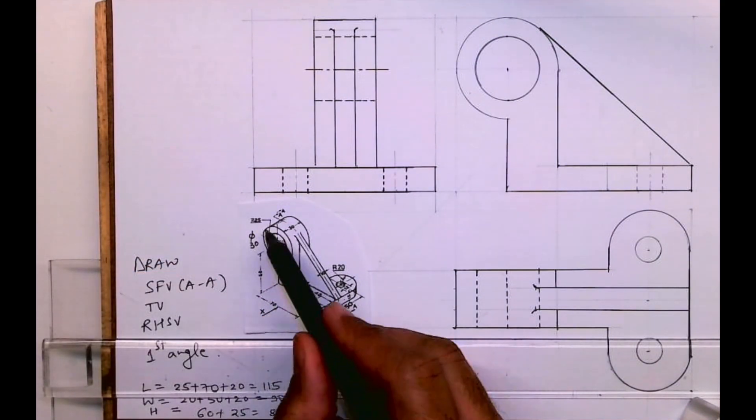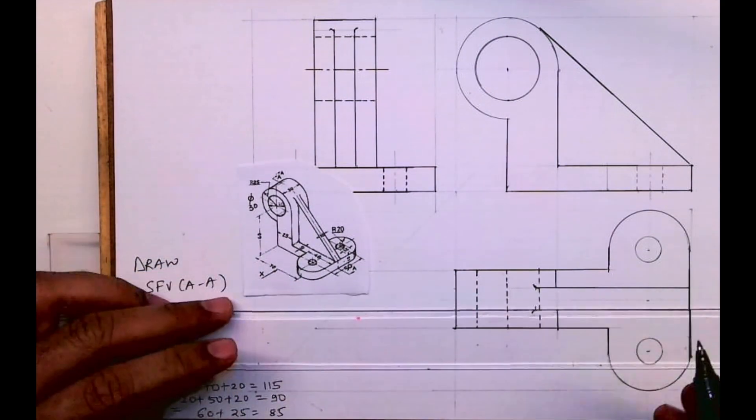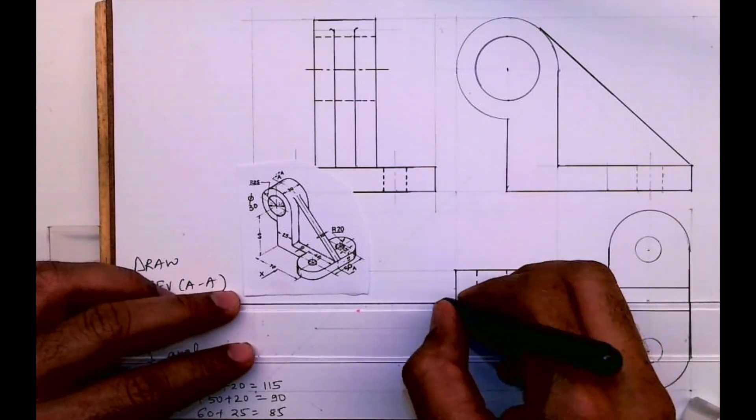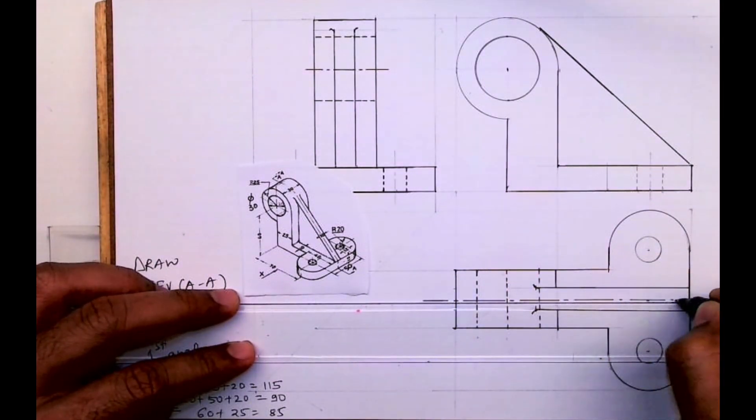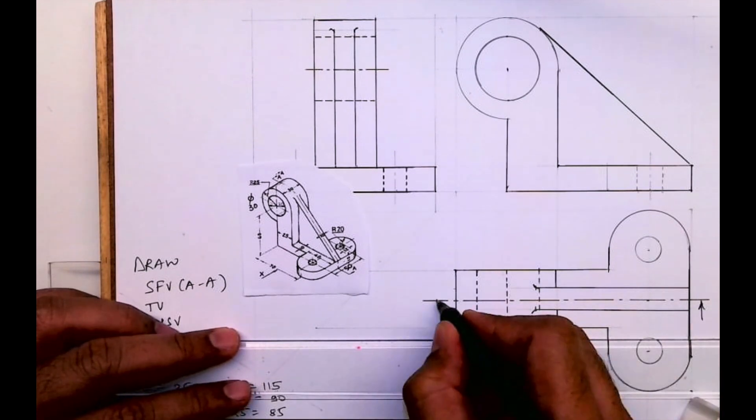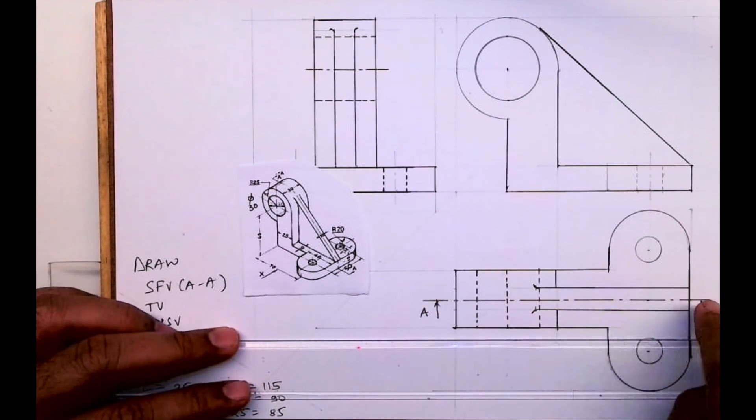Now we need to do sectional front view along AA. It is cut like this. So the cutting plane line is passing through like this in top view. This is AA.